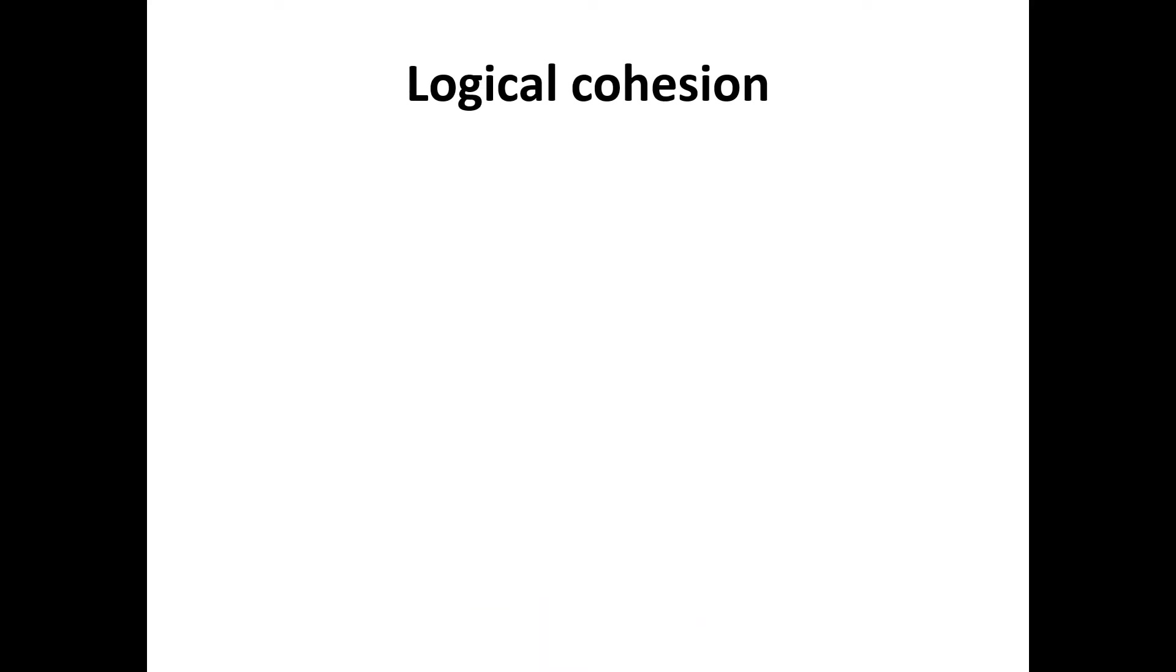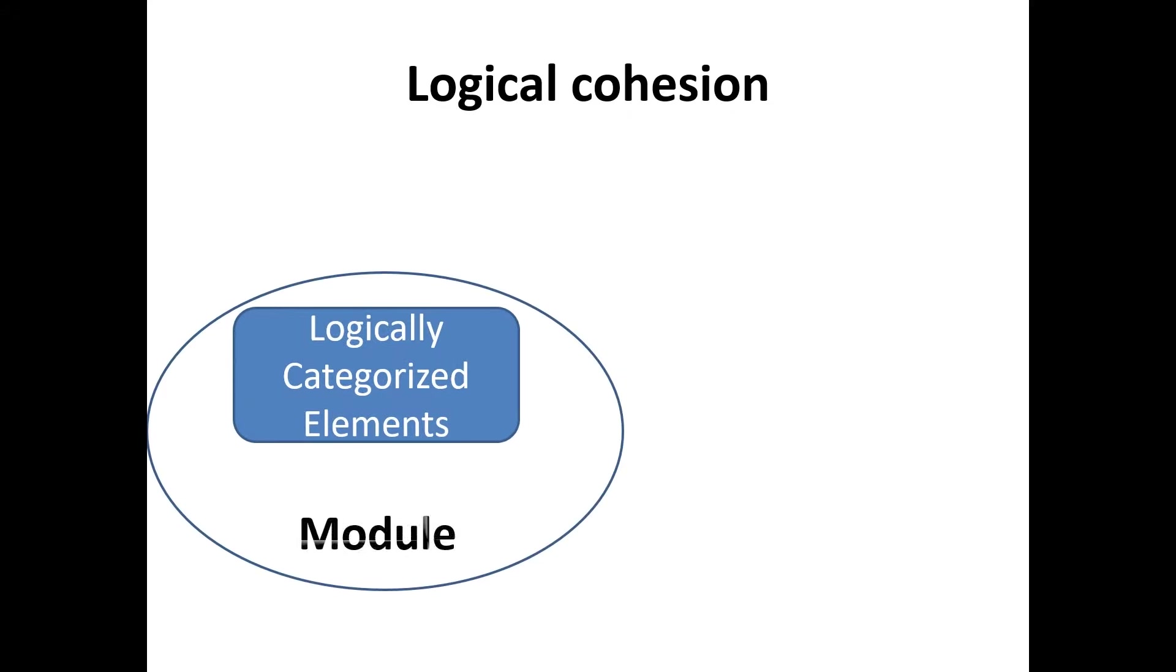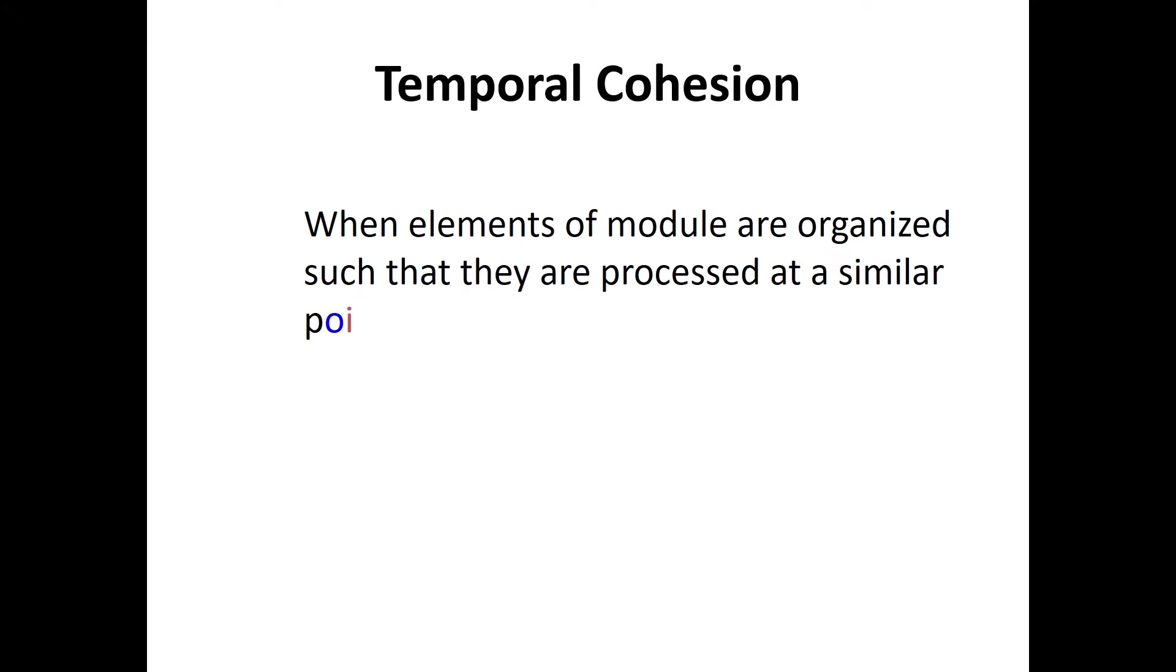Logical cohesion. When logically categorized elements are put together into a module, this is called logical cohesion. Temporal cohesion. When elements of a module are organized such that they are processed at a similar point in time, they are called temporal cohesion.